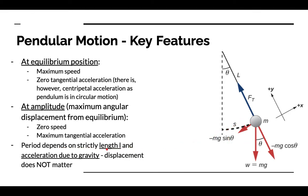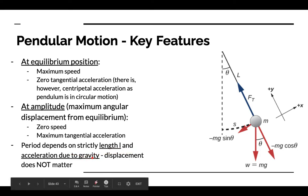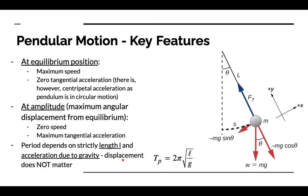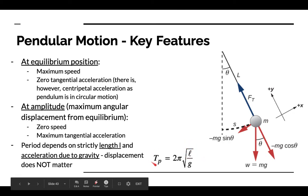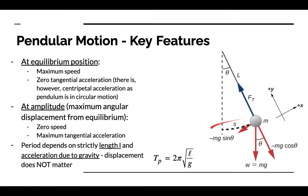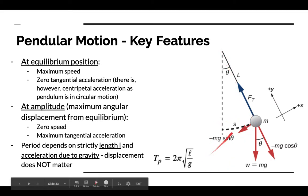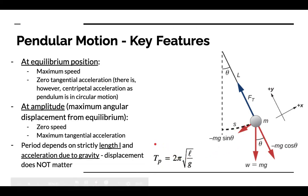The period depends strictly on the length L and the acceleration due to gravity. Displacement does not matter — angle theta has no effect on our period. L has a direct relationship with the pendulum period: if we increase L, it's going to take more time to complete a cycle, so the period will increase. For G, it's an inverse relationship — if we increase our acceleration due to gravity, that increases the mg sine theta component, giving a higher tangential acceleration, and thus we complete a period in a shorter amount of time.